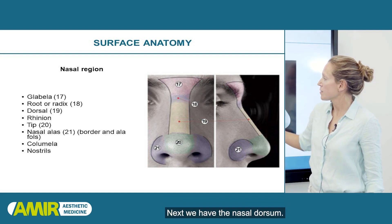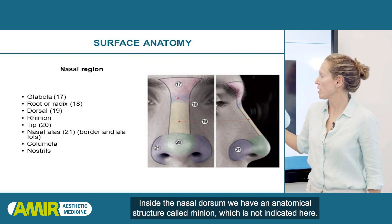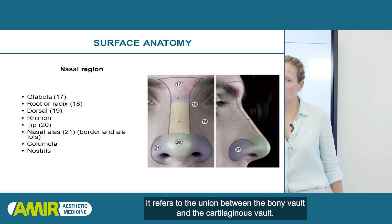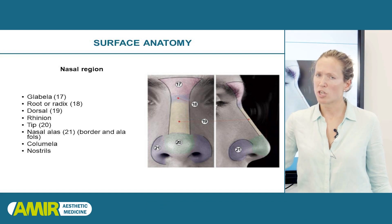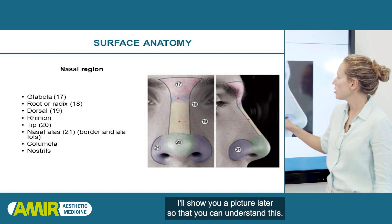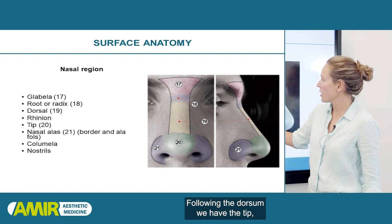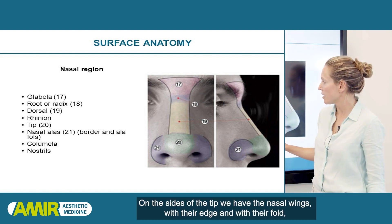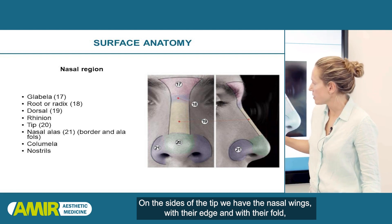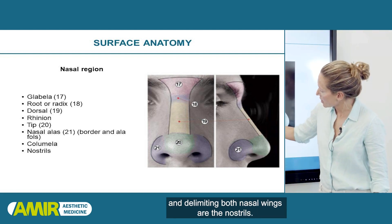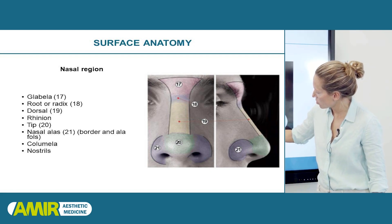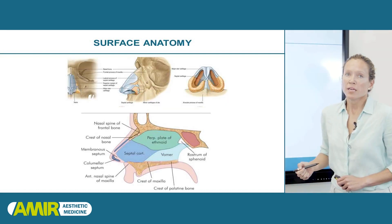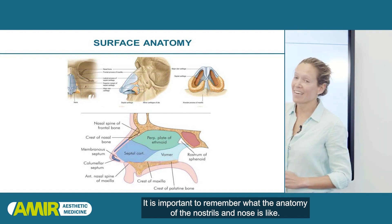Next we have the nasal dorsum. Inside the nasal dorsum, we have an anatomical structure called the rhinion, which refers to the union between the bony vault and the cartilaginous vault — I'll show you a picture later so that you can understand this. Following the dorsum, we have the tip, often referred to as the nasal tip. On the sides of the tip, we have the nasal wings with their edges and their fold. Delimiting both nasal wings are the nostrils, and in the center, the columella, also called the cartilaginous septum.